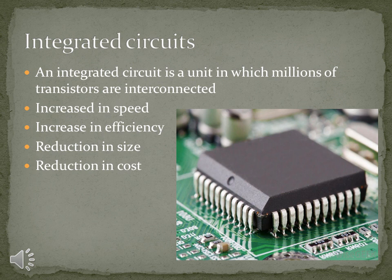As the second generation of computers had many transistors, the third generation interlinked them. They could be dozens, hundreds, or millions. The third generation technology used to create many circuits and interconnects to form an integrated circuit. The image you can see is of the integrated circuit, inside which many transistors are interconnected. Hence, they have increased speed as well as efficiency, and size and cost reduction.